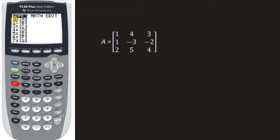We're on one here, so I'm going to scroll over to edit, and I want to edit A. See how A is highlighted? I'm going to hit enter, and then I've got to enter in the dimensions of the matrix.